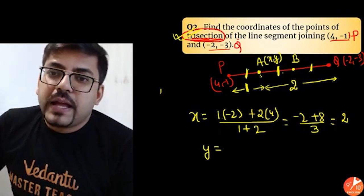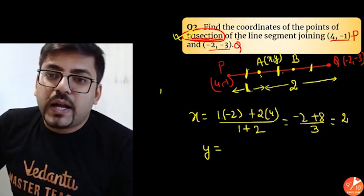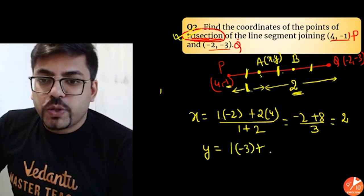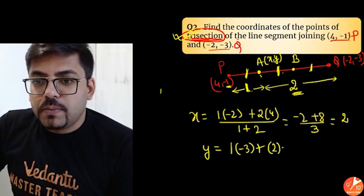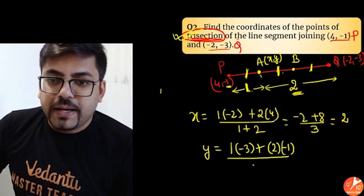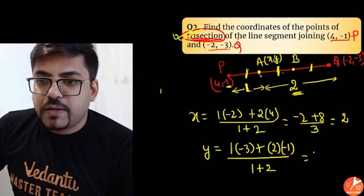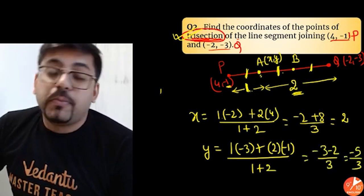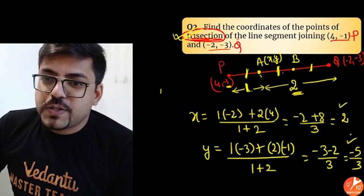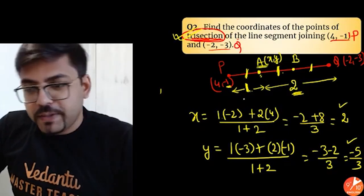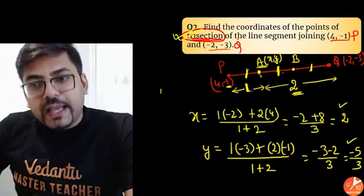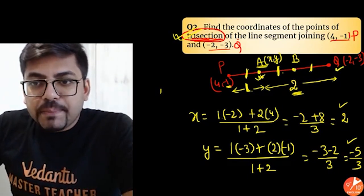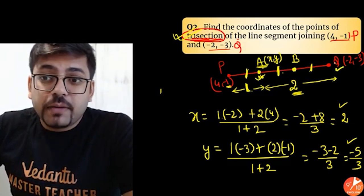Similarly, solving for Y: M·Y2 plus N·Y1 divided by M plus N — that is 1 into minus 3 plus 2 into minus 1 divided by 1 plus 2. So minus 3 minus 2 divided by 3 gives minus 5 by 3. So the coordinates of point A are 2 comma minus 5 by 3. Now once you have point A and point Q, point B is nothing but the midpoint of A and Q, because this part equals that part — so you can apply the midpoint formula.